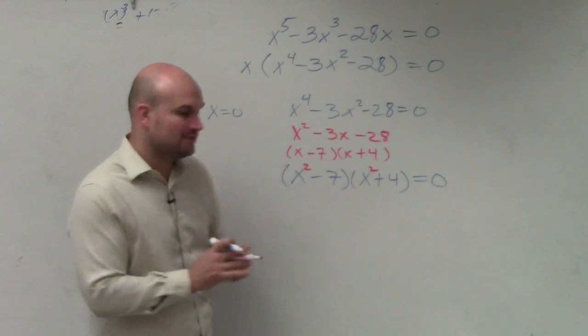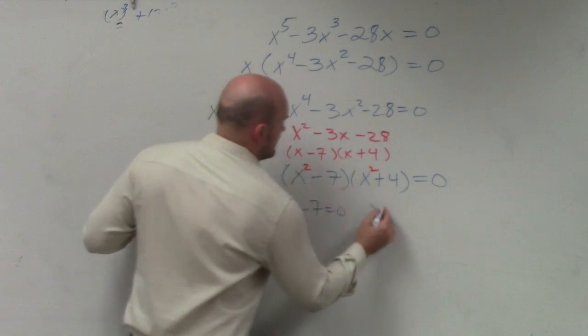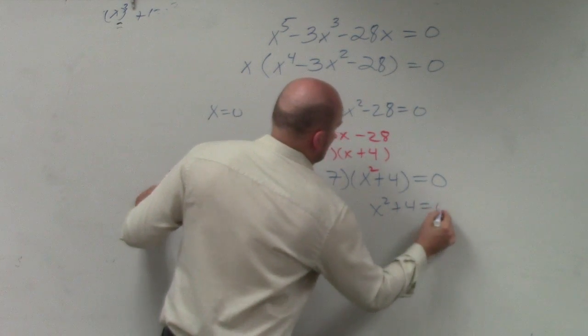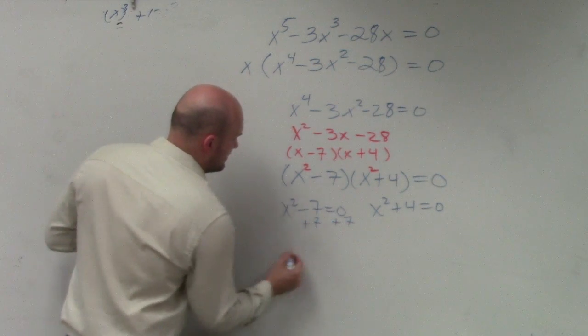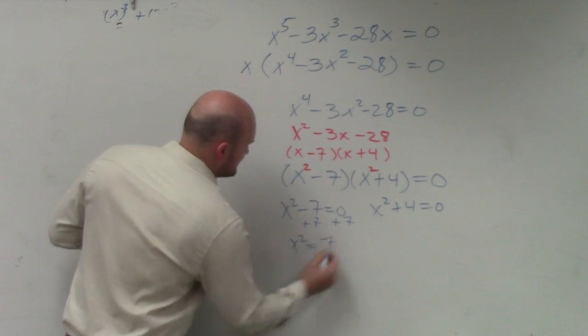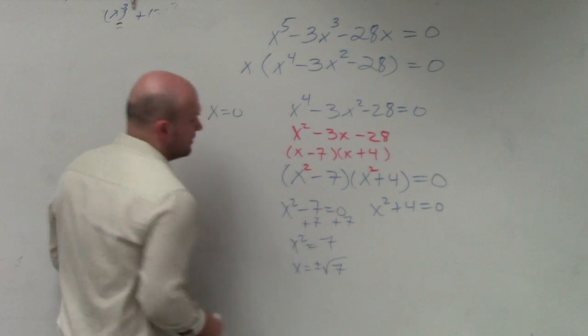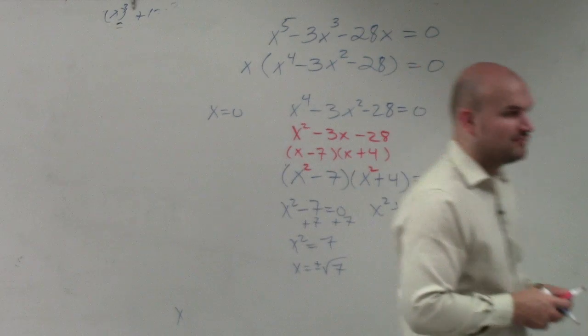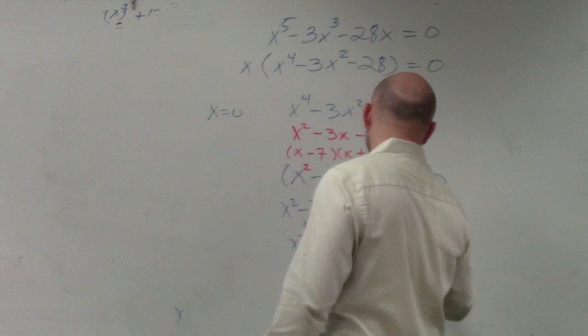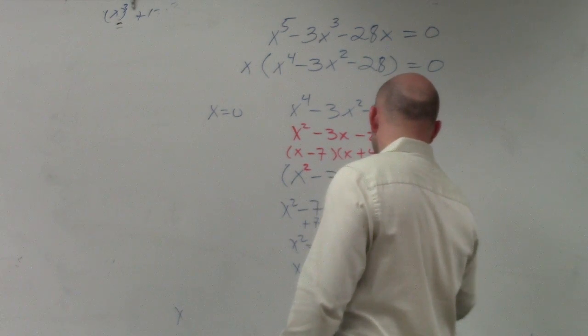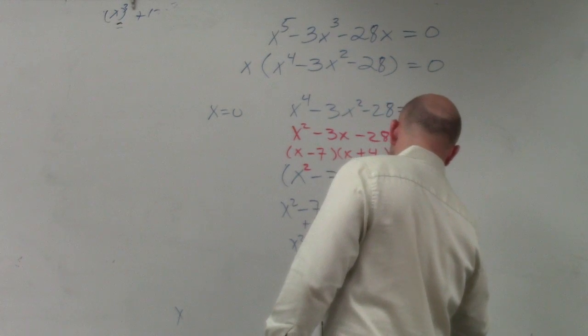Now again, we have a product equal to 0, so you apply the 0 product property. And then you solve. Plus 7, plus 7. x squared equals positive 7. That means x equals plus or minus the square root of 7, or 2.6457513, but we'll leave it as square root of 7. You could subtract 4 on both sides. x squared equals negative 4. When you take the root this time, you're going to have i, so x equals plus or minus 2i.